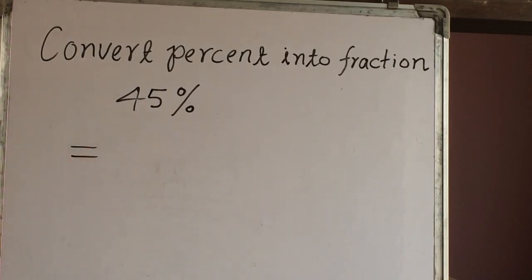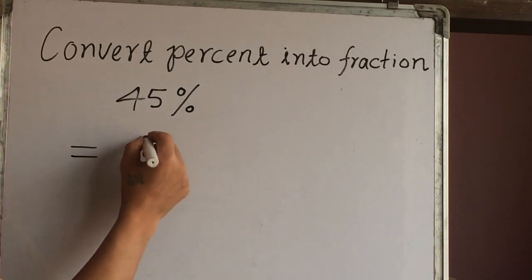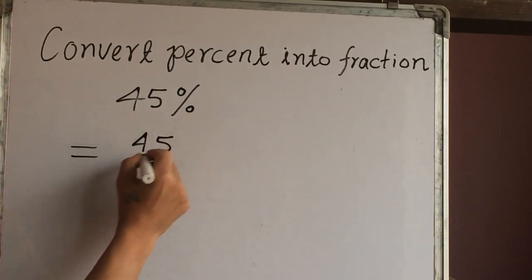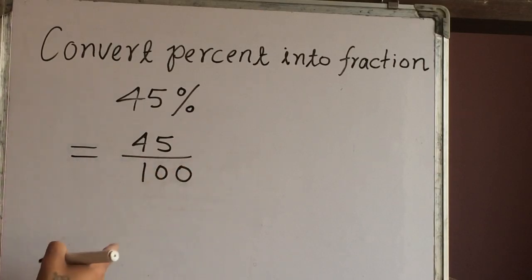Percent is always out of 100. That means this 45 is out of 100. This is a fraction number because we have here denominator and numerator.